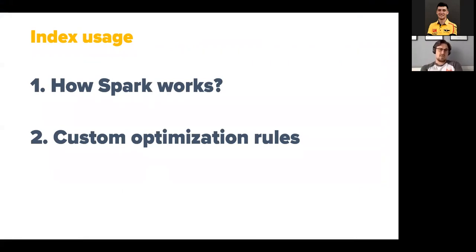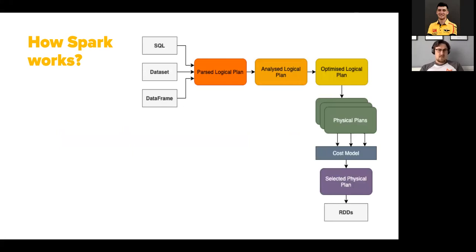Let's speak about index usage. To understand it, we need to understand how Spark works. When you write your SQL, dataset, or data frame - no matter which language - it goes through a number of phases. The first one is the parsed logical plan: we have a tree of operations we want to process, and the parsed logical plan is the simplest way to represent this. On the next phase we have the analyzed logical plan, where the catalog is used for resolving different string literals to find specific columns, specific table names, et cetera - to be sure that everything we provided exists. In most cases where you make a typo in your column name, you will likely fail on this phase.